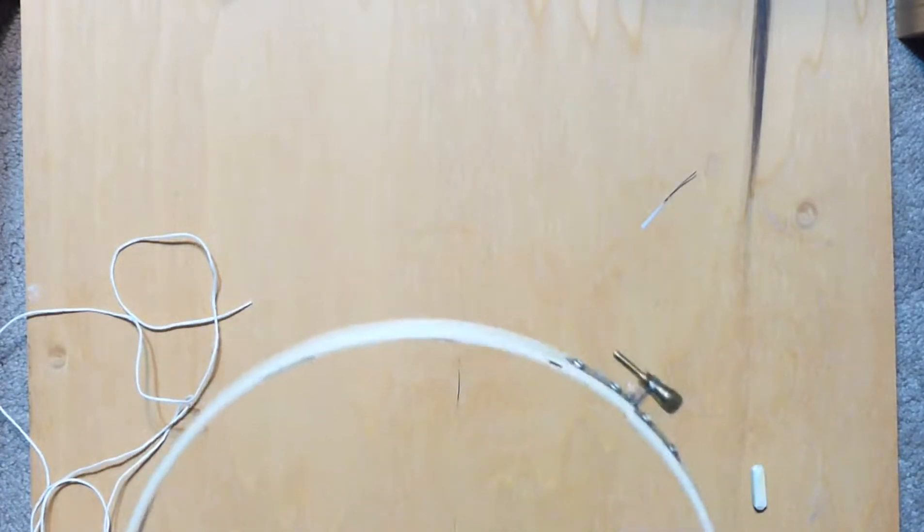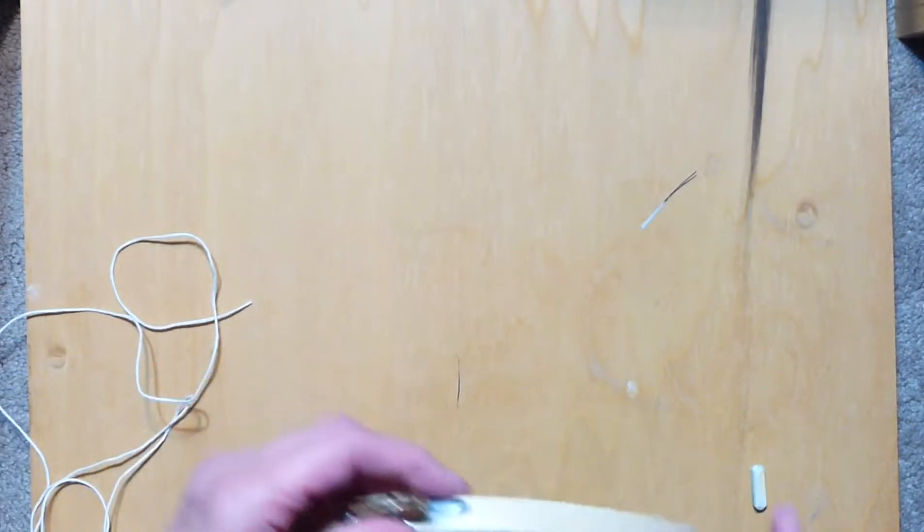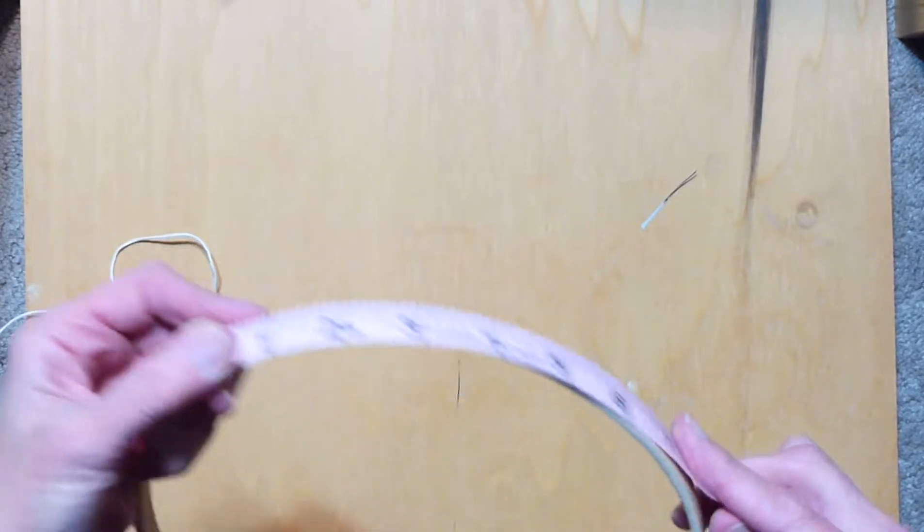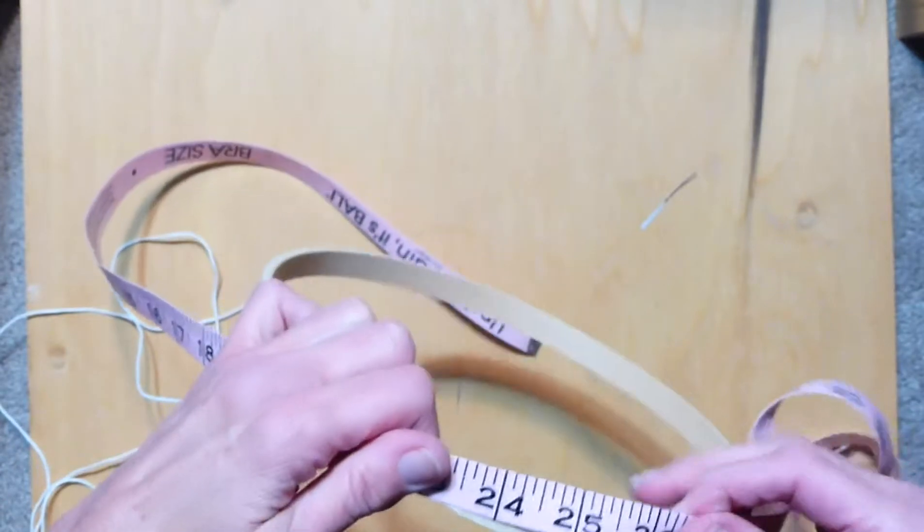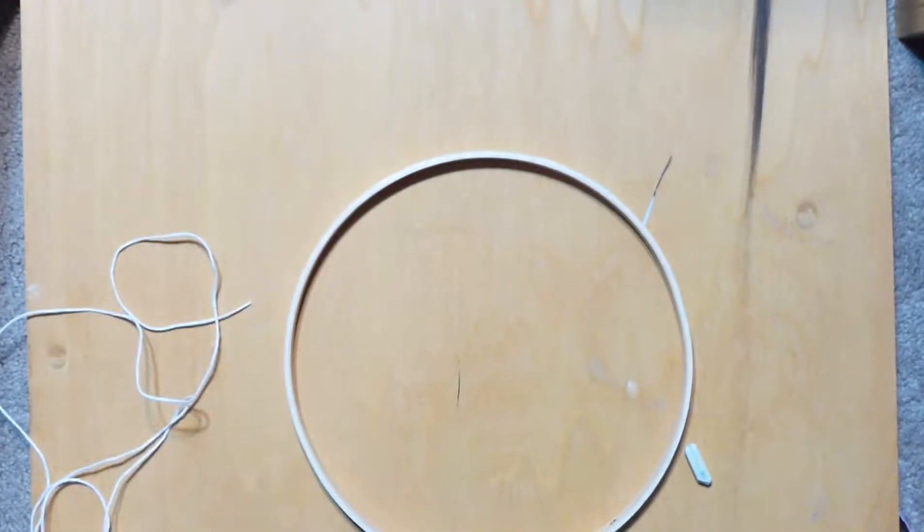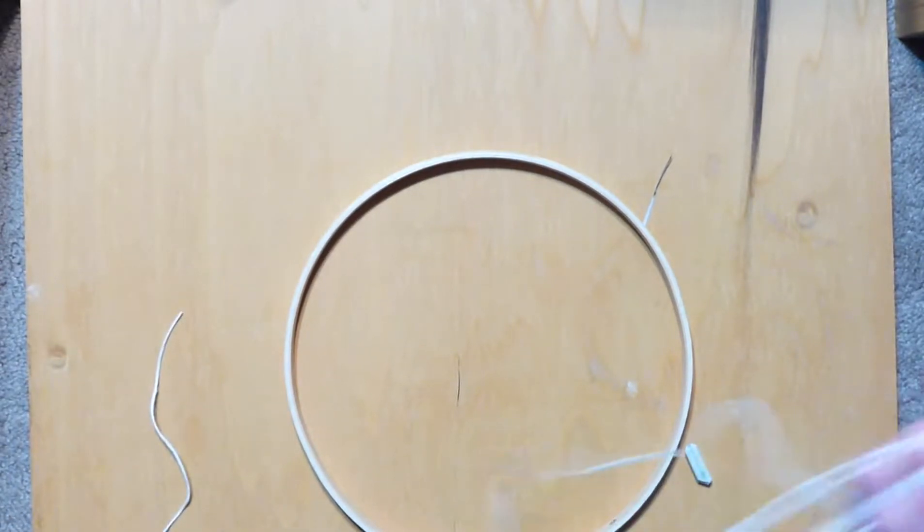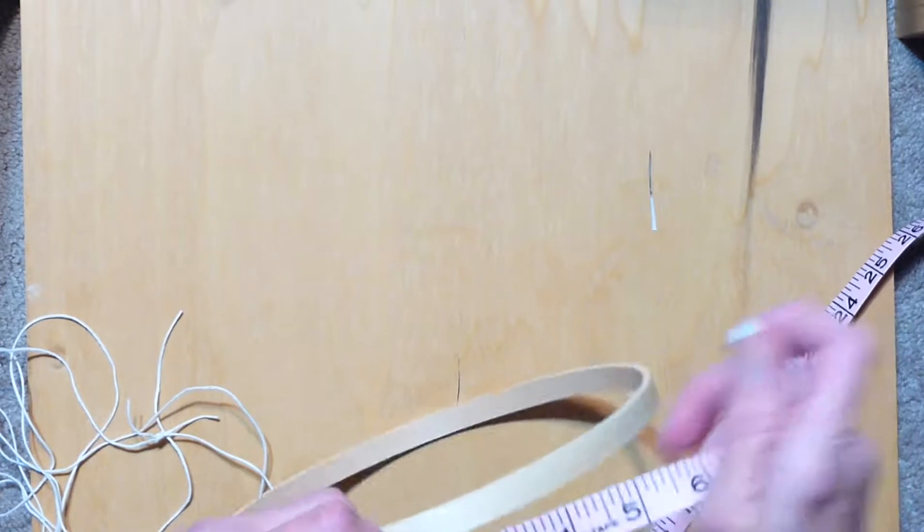To start our webbing I'm just going to measure around this with our measuring tape and the diameter is 26 inches. So if we divide that by eight for instance it would be about 3.3 inches, so I'm just going to kind of eyeball it here.